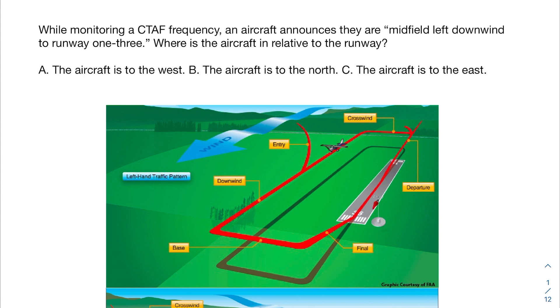We're going to be doing that by looking at two practice problems. This first one says, while monitoring a CTAF frequency, an aircraft announces they are midfield left downwind to runway 13. Where is the aircraft relative to the runway?